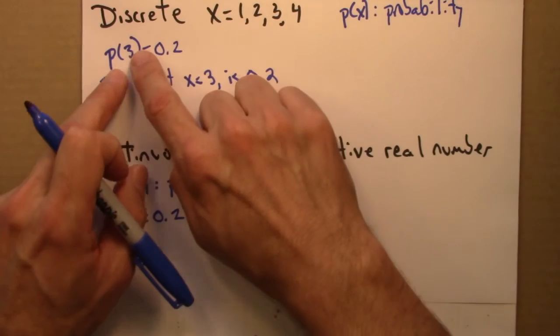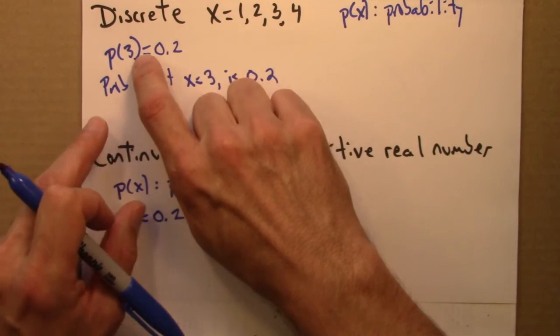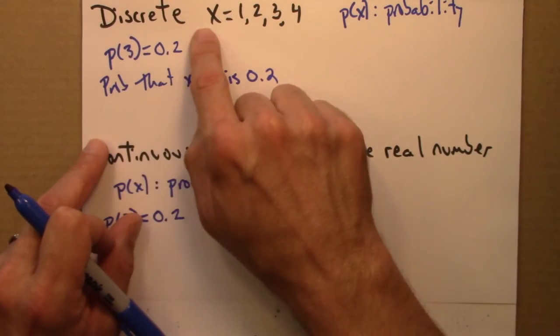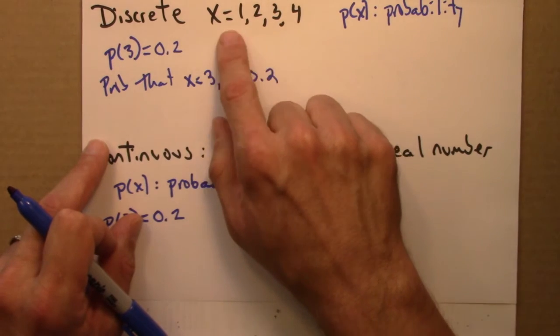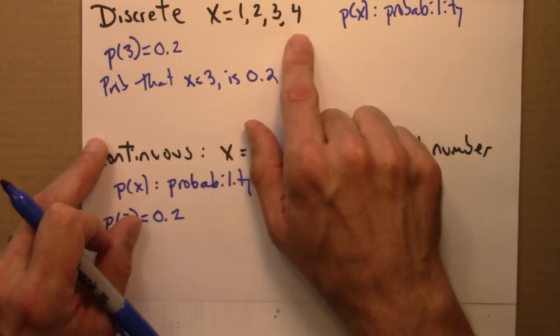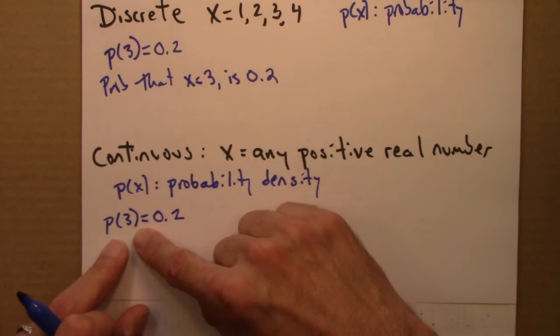So very roughly speaking, to calculate this, we would do the number of occurrences divided by the number of possible outcomes, we would get 4. Here, we're dividing by infinity, everything's going to be 0.